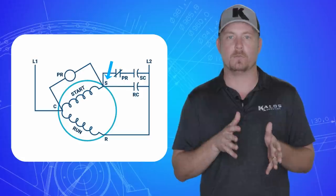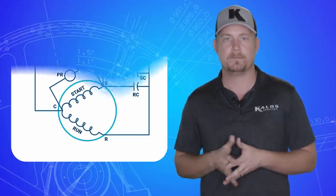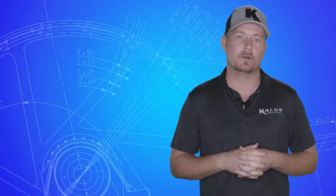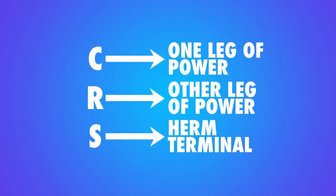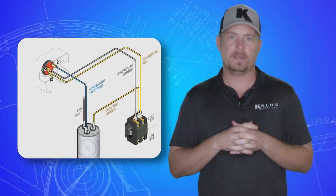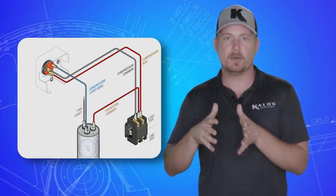So compressor terminals: C goes to one leg of power, R goes to the other, S goes to the Herm terminal on a dual run capacitor with the other side of that capacitor C going to the same leg that feeds R. See what I'm saying? It's confusing.